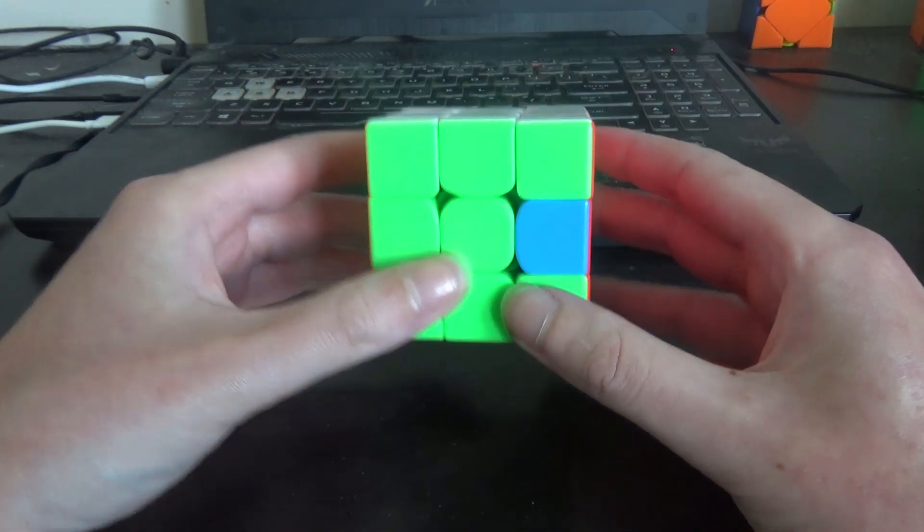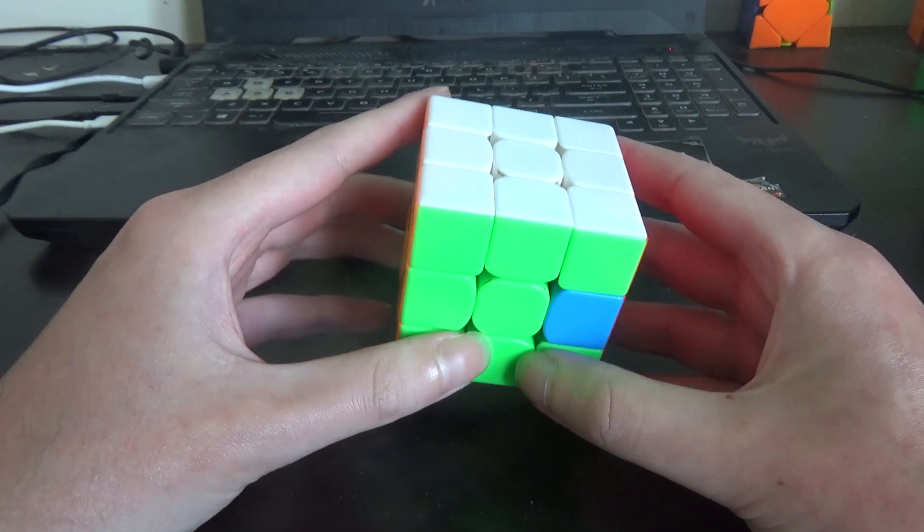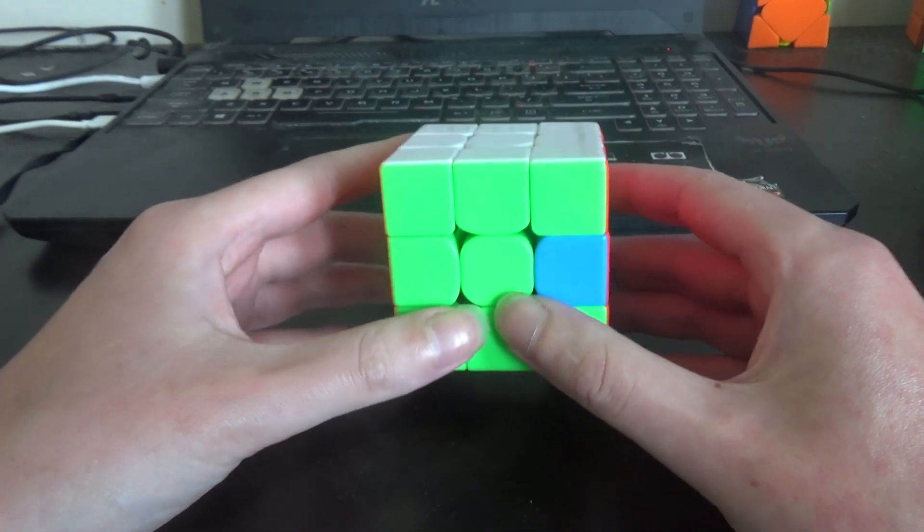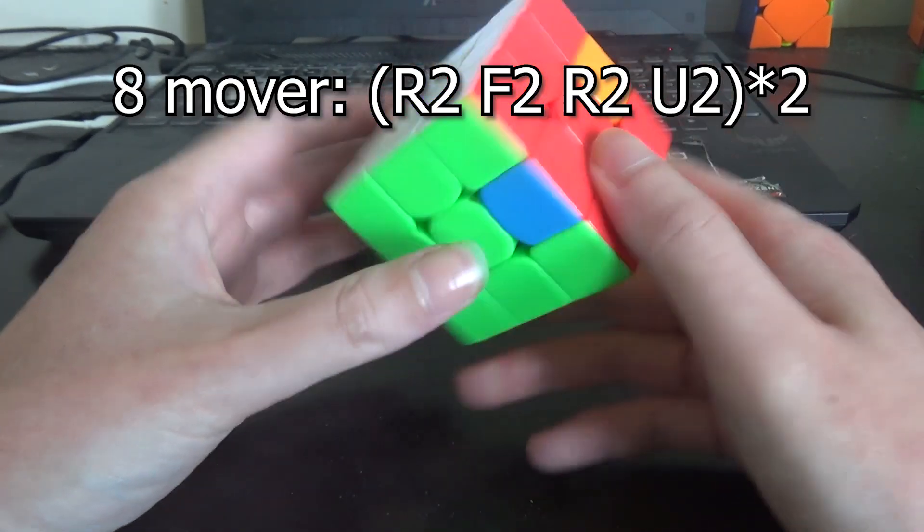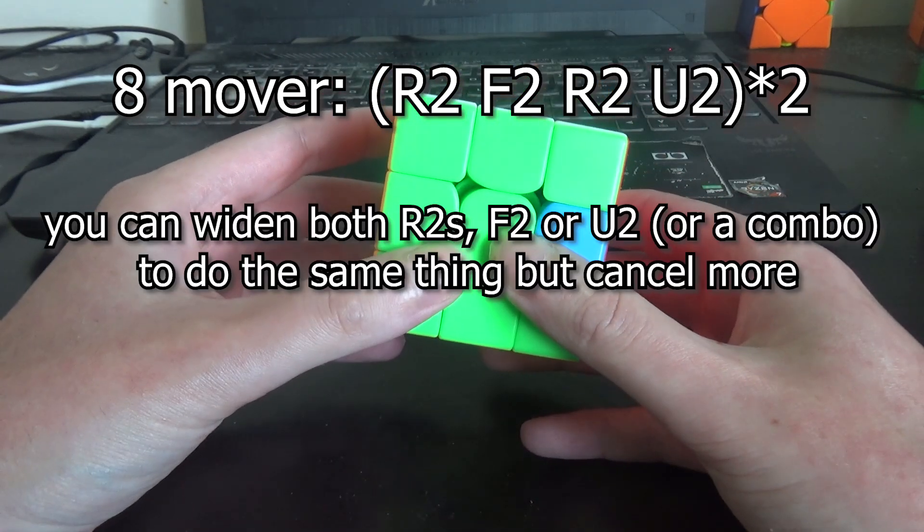The way to solve it is by inserting slices at various points in the post-DR part of your skeleton and just trying to find a combination that cancels the most moves while actually solving the cube. One other thing that's sometimes useful and sometimes required for optimal is inserting an 8 mover which can often cancel 7 or 8 moves like that.